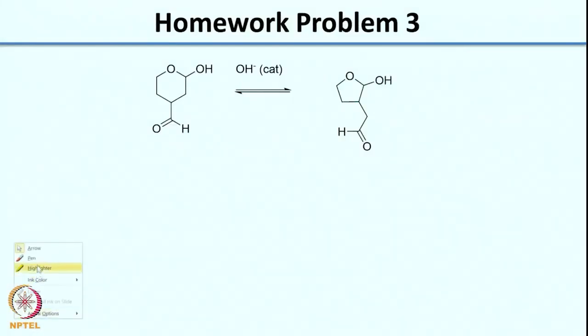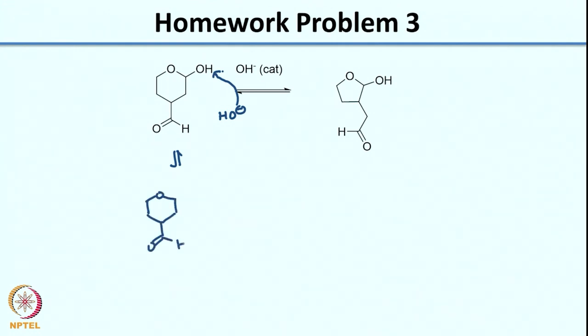Sometimes you might take 1 or 2 tries; sometimes you would get it immediately. Coming to the very last problem: here again you have a hemiacetal and you have OH- in a catalytic amount. What it tells you is the OH- is not acting as a nucleophile — it is probably acting as a base. You can think of the OH- deprotonating, and what you would get is O- plus water. Now you have a source in your O-, so it can come in here and this bond will open.